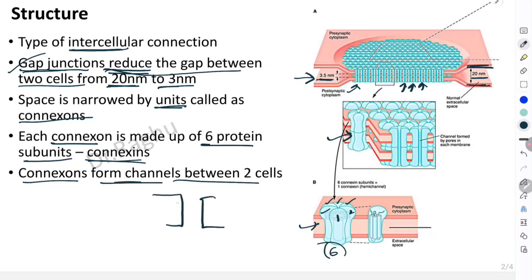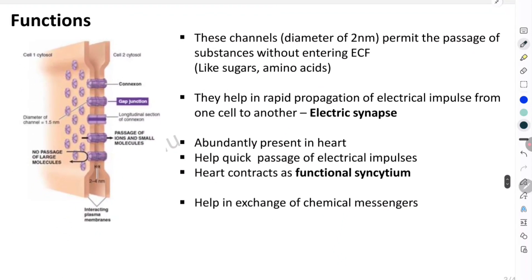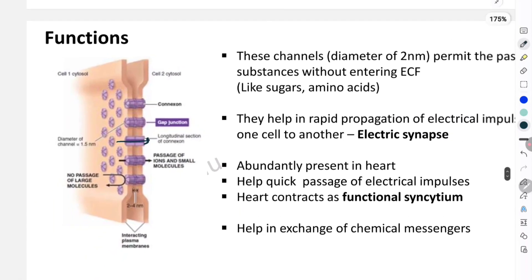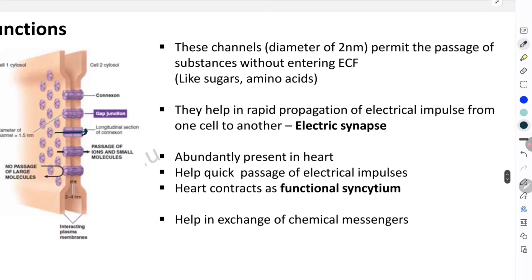This is one cell and this is another cell, and these connexons are the ones forming channels between the two cells — you can see there is a gap here in between the connexons. These channels have a diameter of roughly two nanometers.